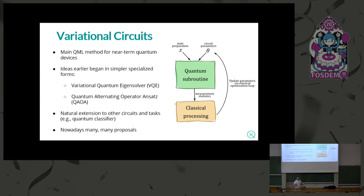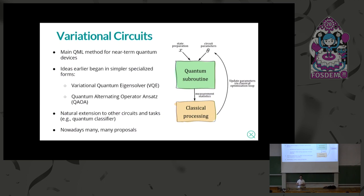This variational quantum algorithm involves a quantum subroutine — a quantum black box with gates on quantum hardware. We prepare a quantum state with circuit parameters, run the circuit, get a measurement output, and then perform classical processing and optimization. Techniques such as gradient-free optimization are used to update parameters via a classical optimization loop. Algorithms like VQE and QAOA were the first two major variational quantum algorithms. The field has since grown significantly, with extensions like quantum classifiers. These algorithms seem to work well on noisy devices even without fault tolerance.